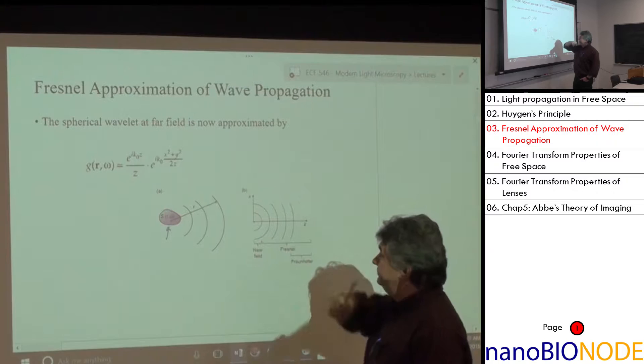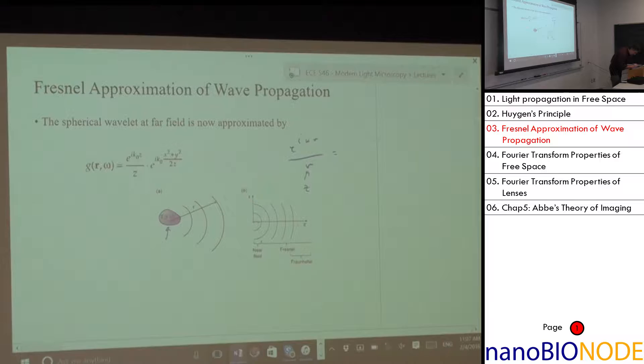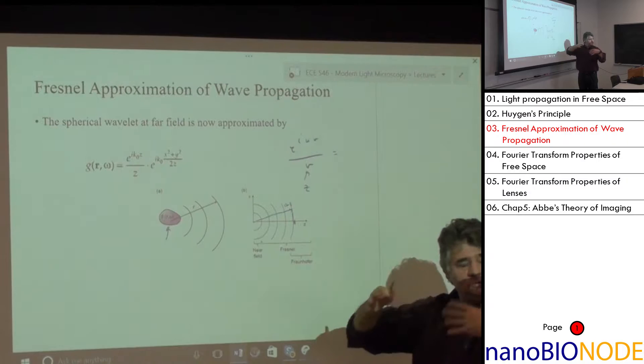Fresnel's approximation takes e^(ikr)/r and approximates it. First, you can replace the r in the amplitude denominator with z — if you're far from the source, the distance r and the axial distance z are nearly the same; the difference is a cosine, and for small angles that cosine is almost 1. That's one approximation. But in the phase you have to be more careful.